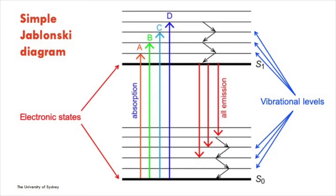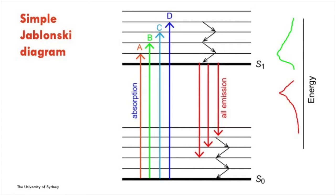In the Jablonski diagram, the thicker lines are the electronic states — S0 the ground state and S1 the excited state — while the thinner lines represent vibrational states. A molecule rests in the S0 ground state. On absorption, the molecule goes from S0 through to the vibrational states above S1, loses energy down to S1, and then emits light going all the way back to S0. You'll note that shorter wavelengths closer to the UV have more energy and excite the molecule to a higher vibrational level, but all energy always returns to the S1 state before emission occurs.